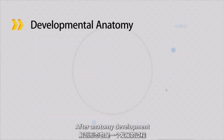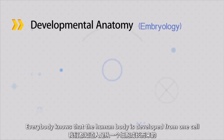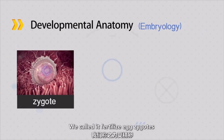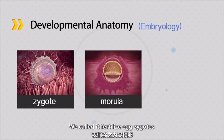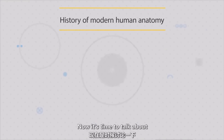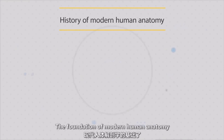Anatomy also includes embryology. For example, everybody knows the human body develops from one single cell — this cell we call the fertilized egg, or zygote — which develops into a baby. So that's what we call embryology.